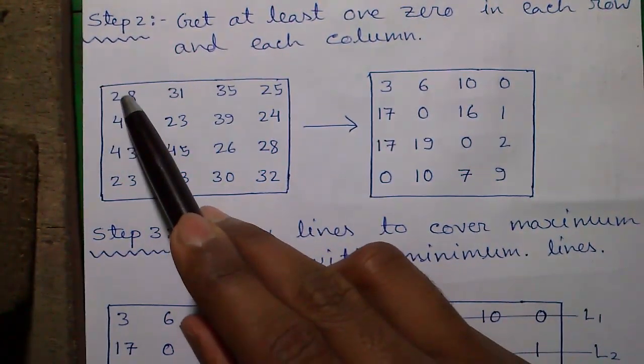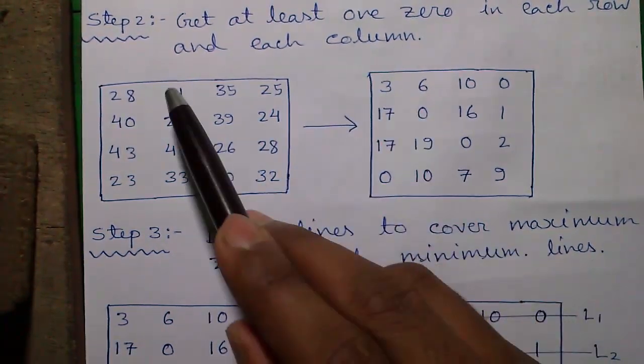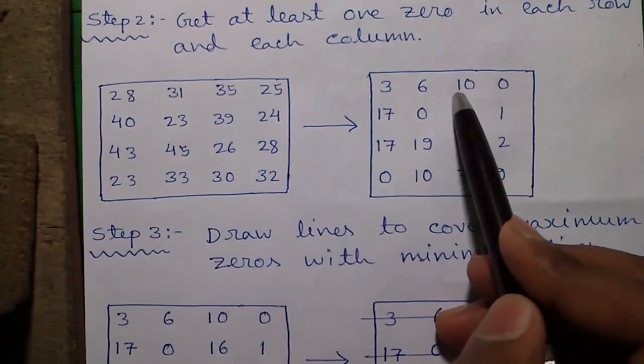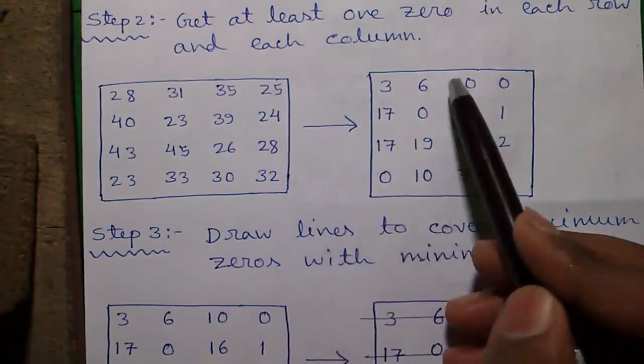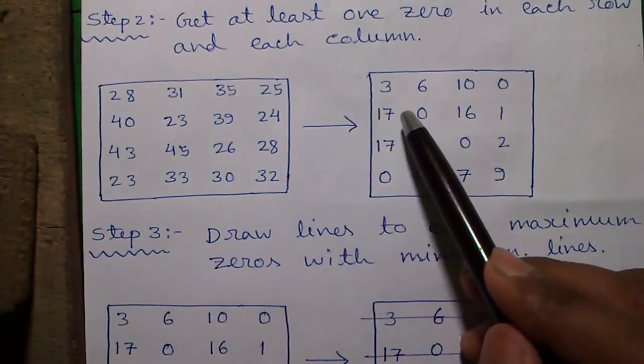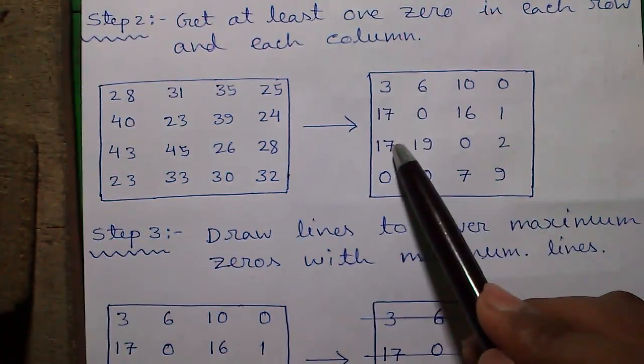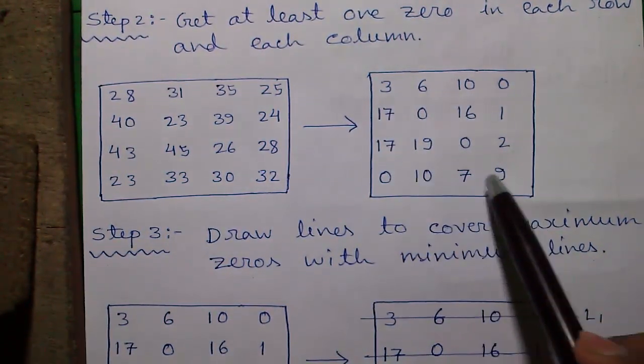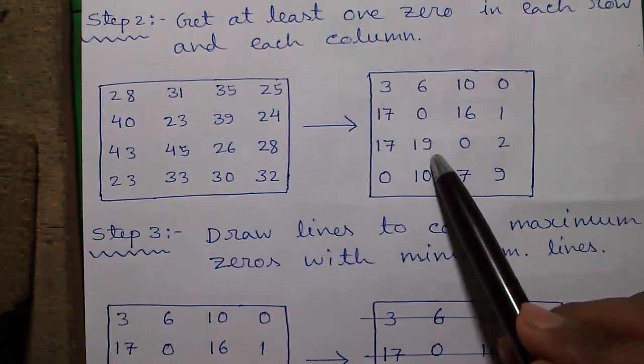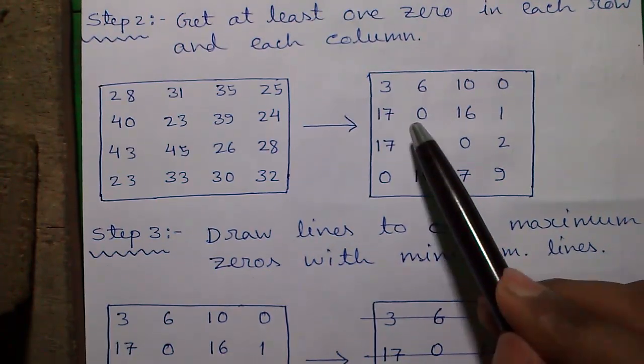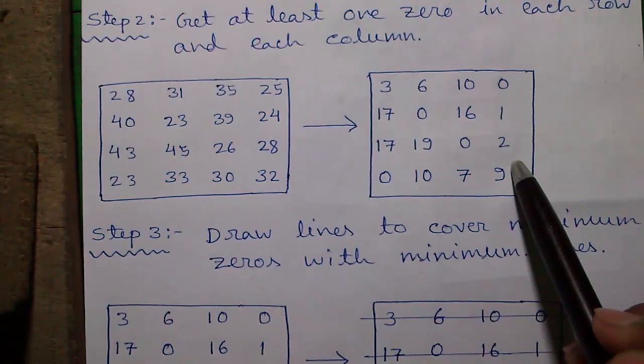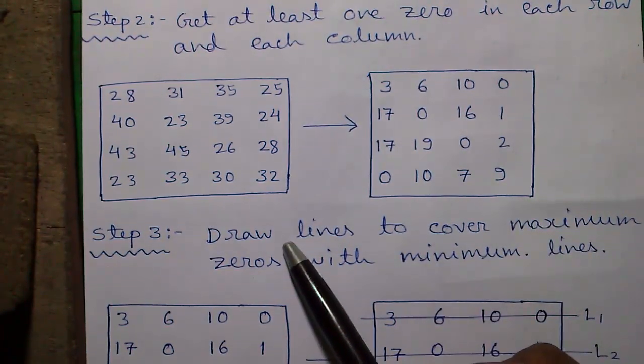So you will get 28 minus 25 is 3, 31 minus 25 is 6, 35 minus 25 is 10, and 25 minus 25 is 0. Similarly do the same to all rows so that you will get at least one 0 in each row and perform the same check to all columns. If they do not have at least one 0. Here luckily we have at least one 0 in each column also, so we can directly proceed to step 3.